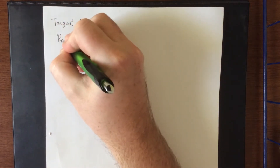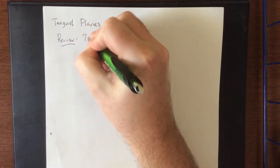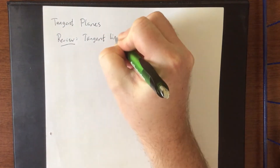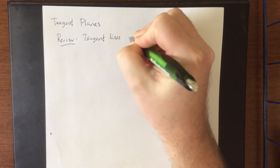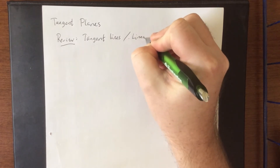The subject of this section is going to be the idea of tangent planes and linear approximations. This is the same as what was covered in a Calc 1 class. What I'd like to do is start by doing a little review of tangent lines and the concept of linearization.